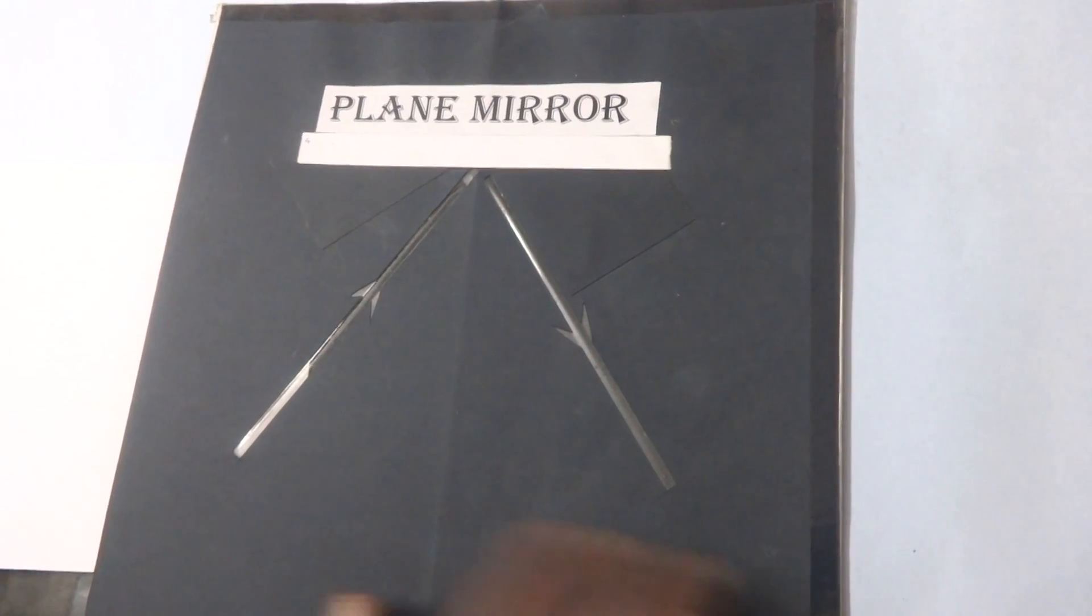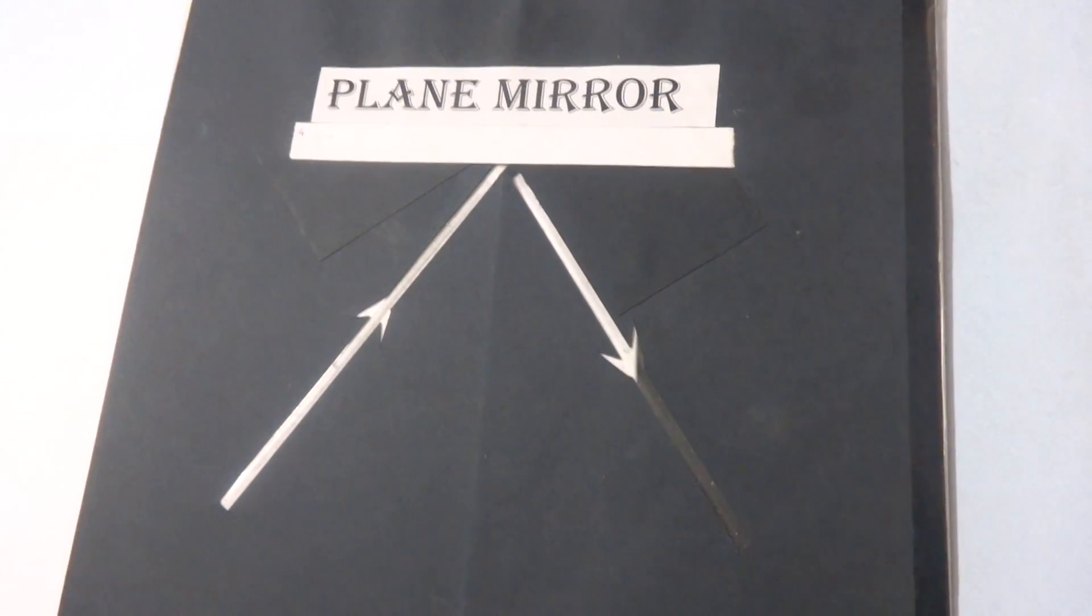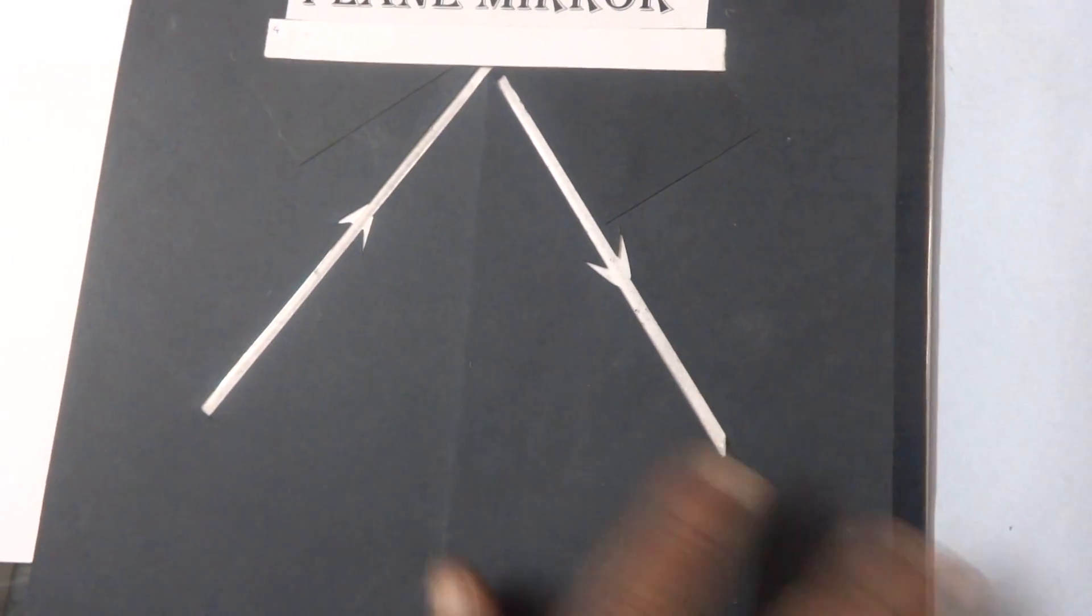This is the reflected ray. This is the incident ray. And this is being reflected. And this is the plane mirror.